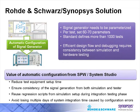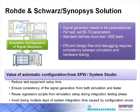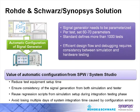So what are the values of automatic configuration from SPW and System Studio? One is to reduce test equipment setup time. Two is to ensure consistency between the parameters used during the simulation and testing. Three is that it allows for the regression scripts developed during simulation time to be used during the testing phase. And four is to prevent losing multiple days of system integration caused by configuration errors.